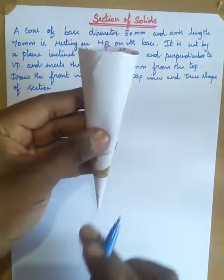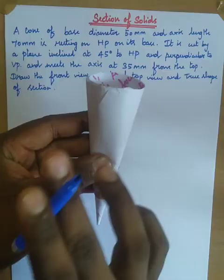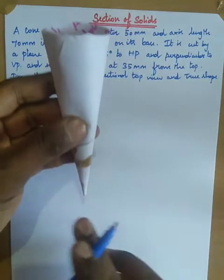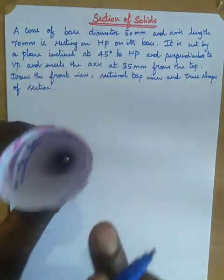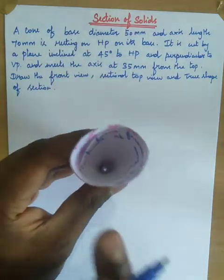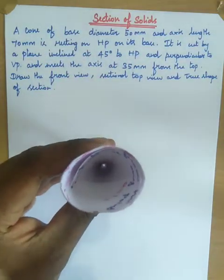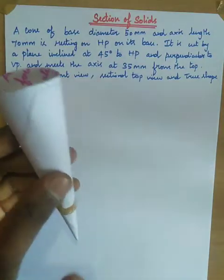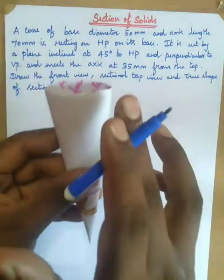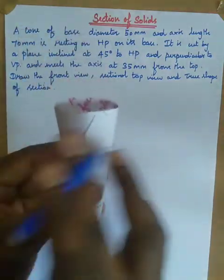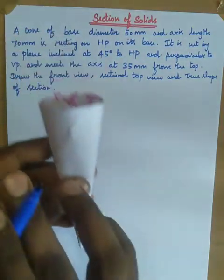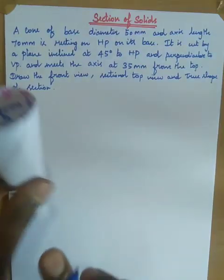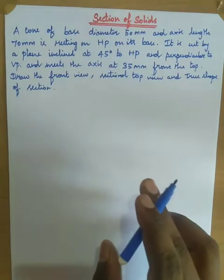This is a cone shape and this is a triangular image. The cap is a circular image. So obviously for a cone, the front view section will be a triangular image and the top view section will be a circular image.